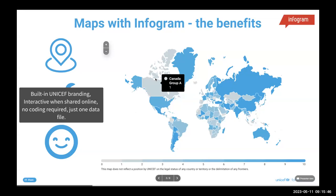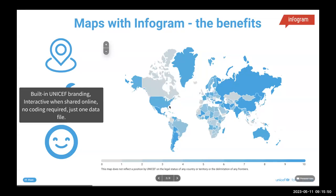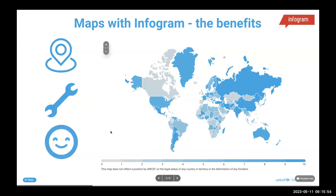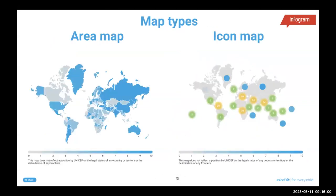The maps are interactive when shared online — you can add hyperlinks, highlight certain sections, and there is no coding required. There is a bit of a learning curve, like any visual tool, and we do provide training. With a map, all you need is one Excel spreadsheet with the data, and you can plot that onto an Infogram map.